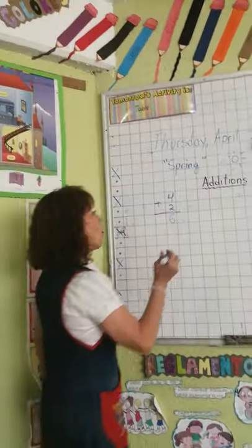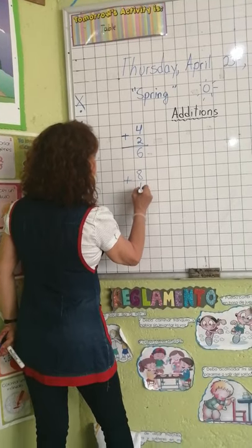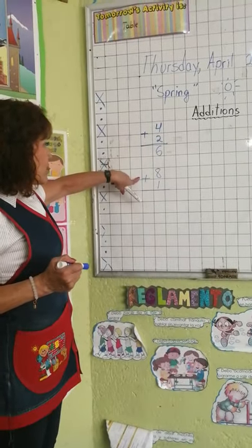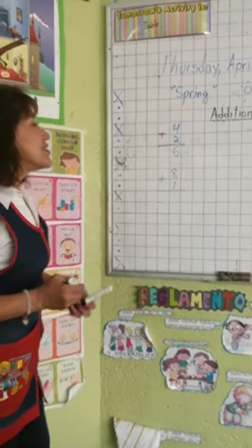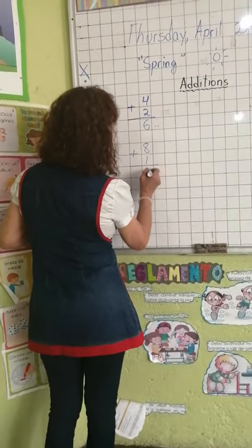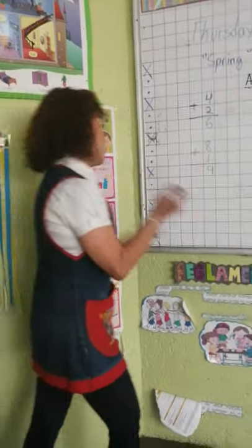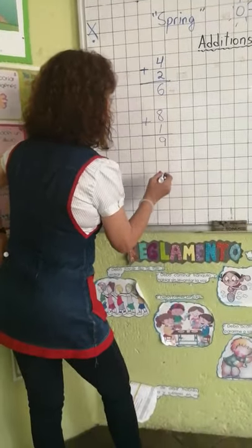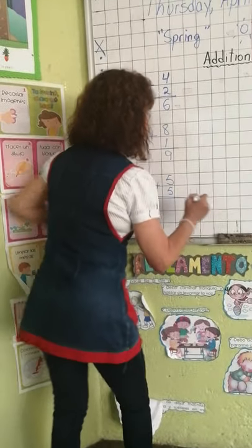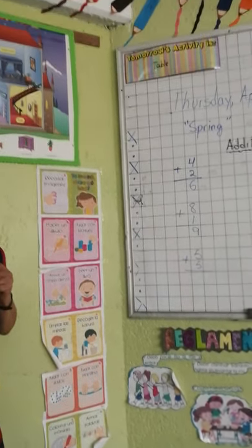Do you know how much is 8 plus 1? Show me the answer. We have 8 plus 1 equals — great! 8 plus 1 is 9. Very good, kids. Now another one: 5 plus 5 equals. Think — if we have 5 and another 5, the answer is 10. Very good for you.